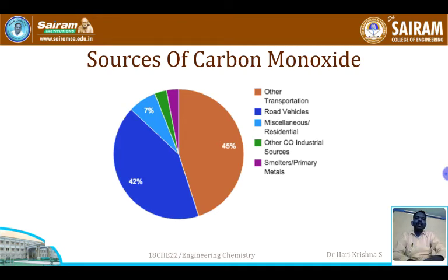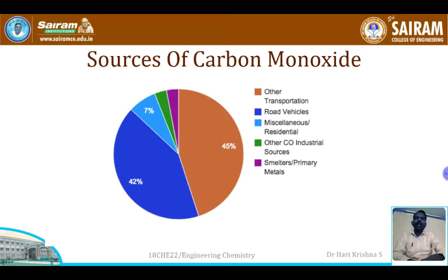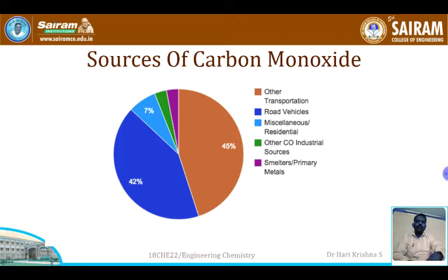45 percent comes from other transportation such as airways and railways, where diesel engines are the main contributor. The remaining 7 percent comes from miscellaneous and residential sources. Industrial sources such as smelters and primary metals processing also make a minor contribution.